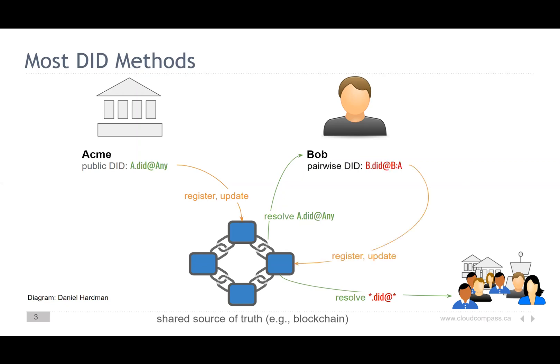To continue the process, Bob creates a pairwise DID and registers that also on the blockchain. Acme does the same — they create a DID for the Acme-Bob relationship, indicated by AB, and put that on the blockchain. Now both Acme and Bob have a DID for each other that they don't share with any other entity, and both can resolve the DIDs.